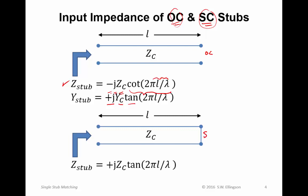For the short-circuited stub, the input impedance is given by this expression. And similarly, the admittance is given by the reciprocal of that expression. So these are handy formulas to keep in mind because we use them all the time in single stub matching.